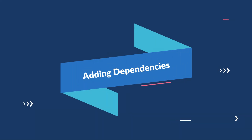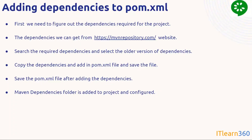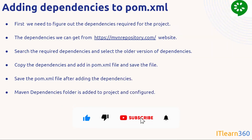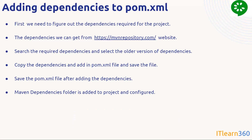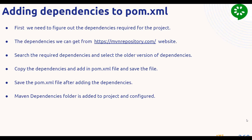For adding dependencies, you need to visit the Maven repository website at mvnrepository.com. This is the Maven repository website — you will go there, find your dependencies, add them straight to your pom.xml file, and your project is set up. We'll now see practically how to perform these steps.